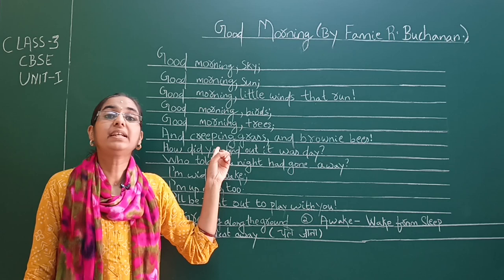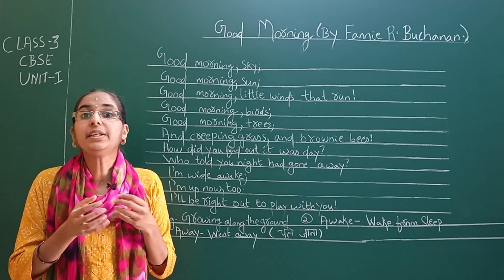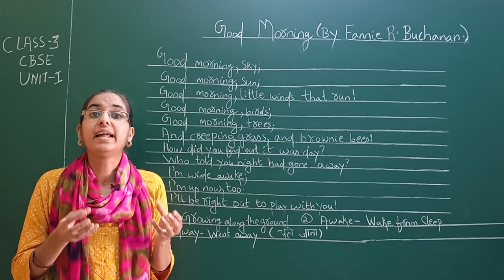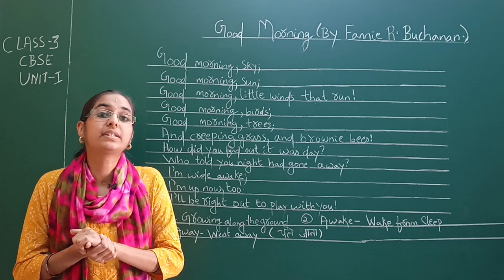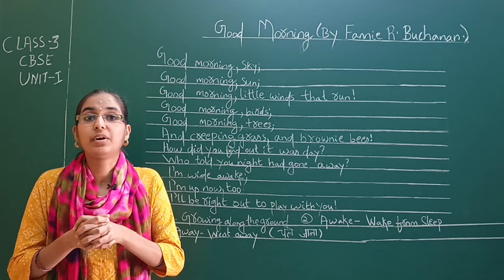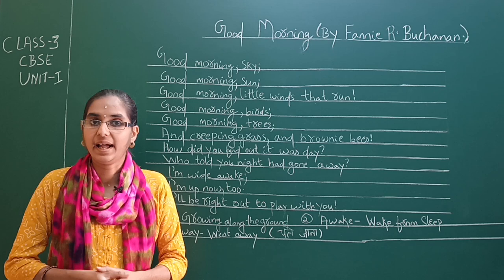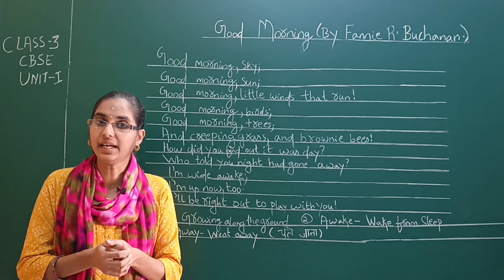And creeping grass and brownie bees — creeping का मतलब होता है growing. घास हो, फूल हो, या कोई पेड़ हो, उसका विकास तभी होता है जब sunlight ground पे पड़ती है, क्योंकि sunlight is very much required for the growth of both plants and animals. तो creeping का मतलब यहाँ है growing grass. Brownie bees का मतलब है brown रंग के मधुमक्खियाँ — she wishes good morning to the growing grass and brownie bees.